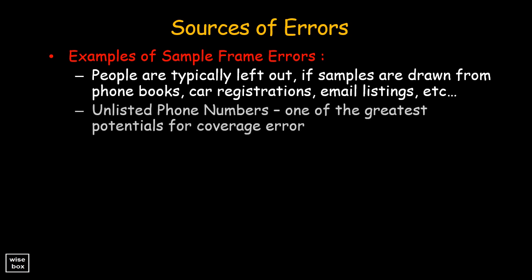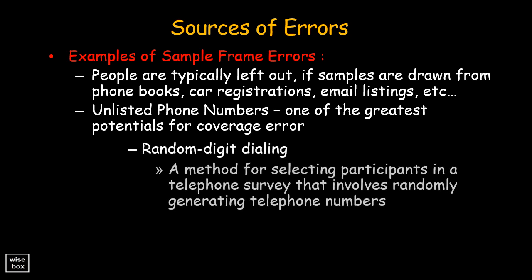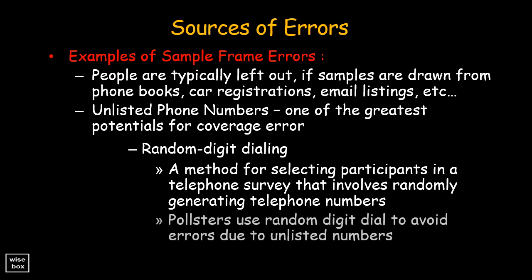Unlisted phone numbers are one of the greatest potentials for coverage error. In order to avoid this, people usually use random digit dialing, a method for selecting participants in a telephone survey that involves randomly generating telephone numbers. Pollsters use random digit dial to avoid errors due to unlisted numbers.